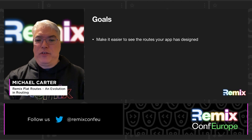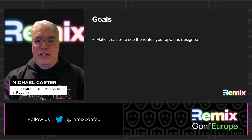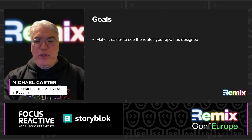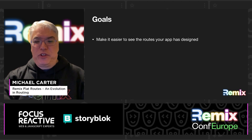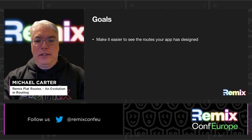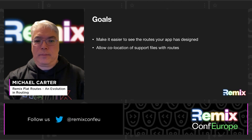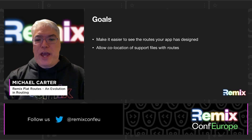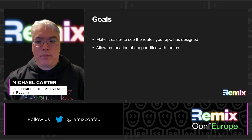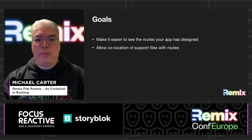So what are the goals of Remix FlatRoutes? First, make it easier to see the routes your app has. Just pop open the routes folder and they're all right there. Since the file system typically sorts folders first, when you have dozens of routes, it's hard to see which folders have layouts and which don't today. Now all related routes are sorted together. Additionally, FlatRoutes allows co-location of support files with routes — you can keep your styles, components, and other supporting files alongside your routes.